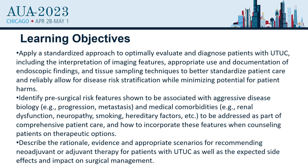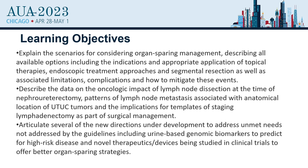The learning objectives are: to apply a standardized approach to evaluate upper tract disease; identify pre-surgical risk factors associated with aggressive disease; describe the rationale and evidence for recommending neoadjuvant and adjuvant chemotherapy; explain scenarios for considering organ-sparing management, which is now a new part of the guideline that is codified and defined; and describe data on the oncologic impact of node dissection, surgical techniques, and new directions under development.